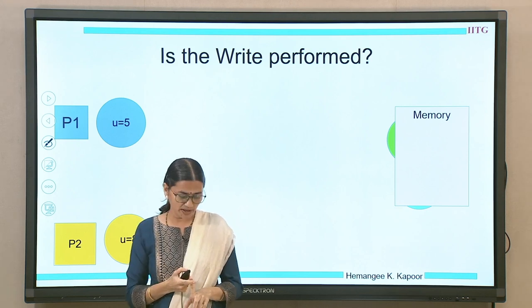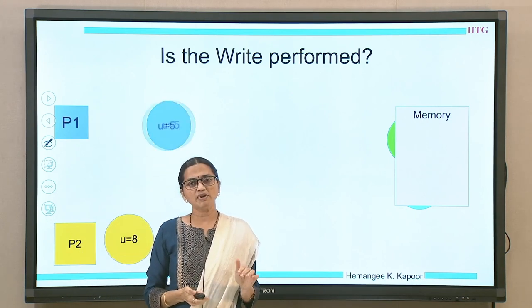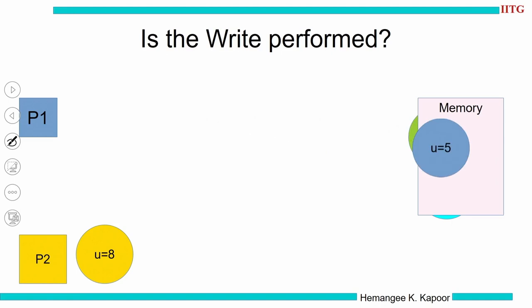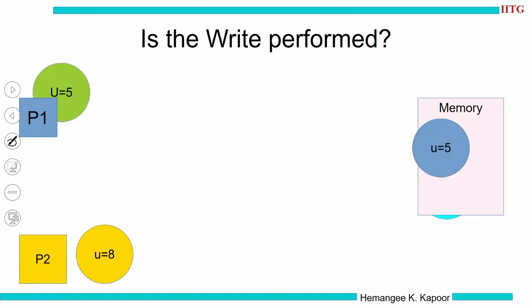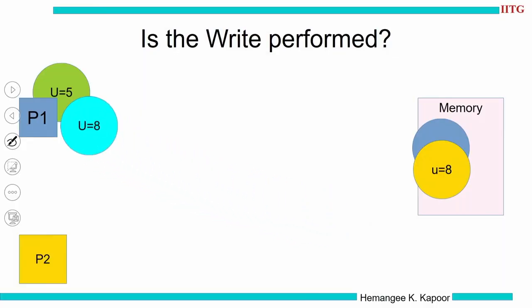Here processor P1 issues u equals 5, and another processor P2 issues u equals 8. P1 issued u equals 5, and it goes into memory. How would P1 know that u equals 5 has reached memory? By reading that location. P1 issues a read to memory, and when the read returns showing 5, then u equals 5 has reached memory. If P2 writes u equals 8, and P1 then reads this, P1 will get the latest value. So a write is performed only by issuing subsequent reads to the same location.